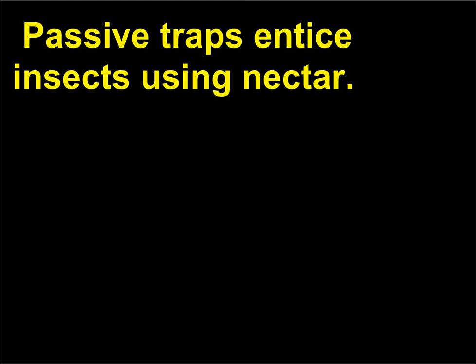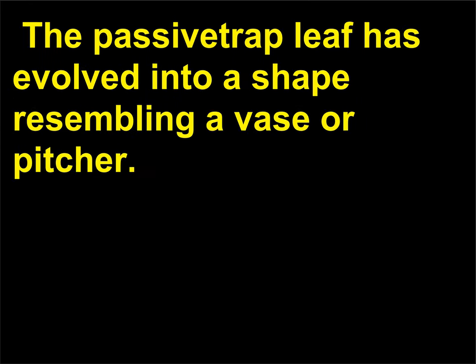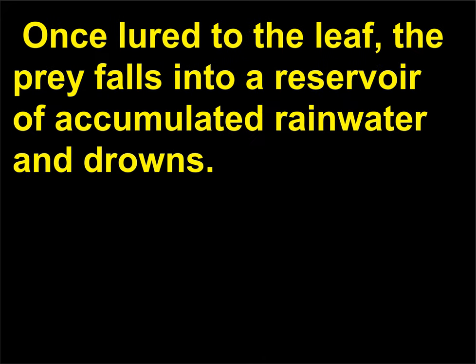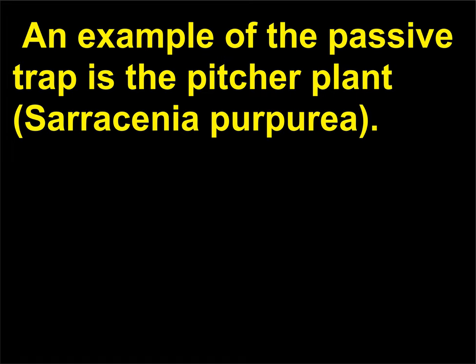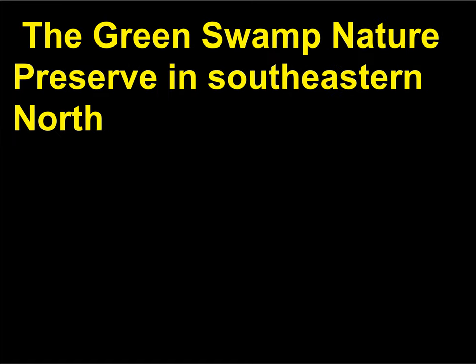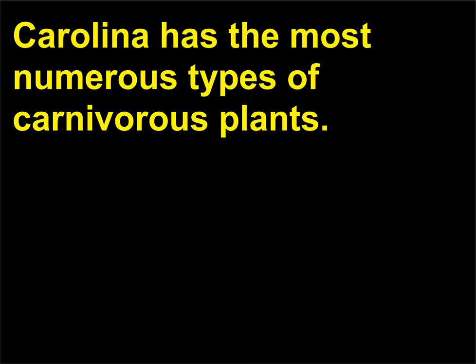Passive traps entice insects using nectar. The passive trap leaf has evolved into a shape resembling a vase or pitcher. Once lured to the leaf, the prey falls into a reservoir of accumulated rainwater and drowns. An example of the passive trap is the pitcher plant (Sarracenia purpurea). The Green Swamp Nature Preserve in southeastern North Carolina has the most numerous types of carnivorous plants.